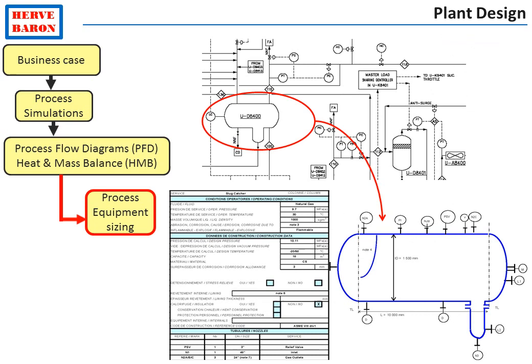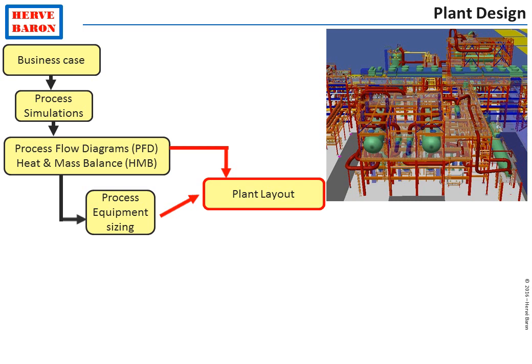Process then performs the sizing of process equipment on the basis of the flow of fluids being handled in such equipment — the gas flow and the liquid flow. The process equipment sizing yields equipment dimensions. Together with the process flow diagrams, which show which equipment is connected to which, it allows to establish the plant layout.